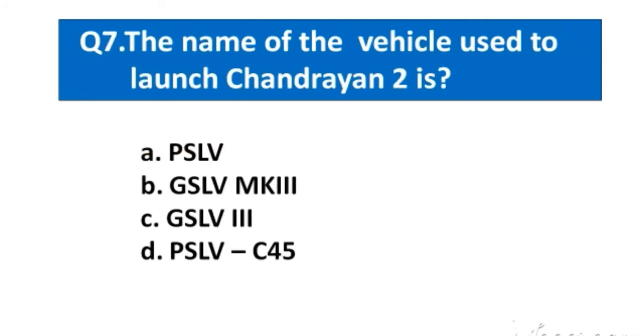Question number 7. The name of the vehicle used to launch Chandrayaan 2 is. Options are A. PSLV, B. GSLV MK3, C. GSLV3, D. PSLV C45. The right answer option B. GSLV MK3.